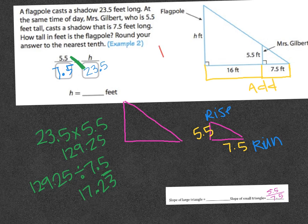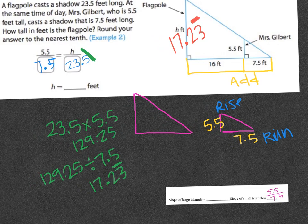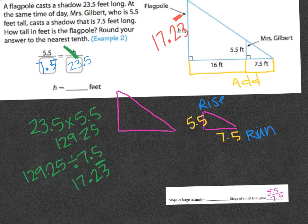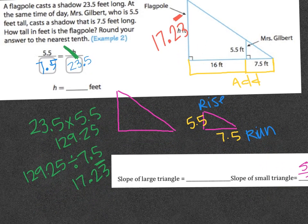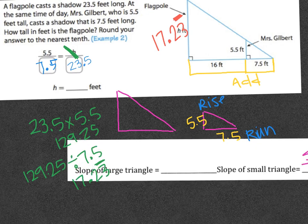I'm going to put that up here because I have more space. 17.23 repeating. And once that's done, now I know the slope of the large triangle because I know the rise and the run. And again, this measurement is going to kind of be weird, but I'm going to put it in anyways. The rise is 17.23 repeating all the way over. The entire length of that shadow was 23.5.